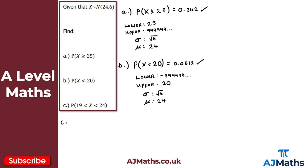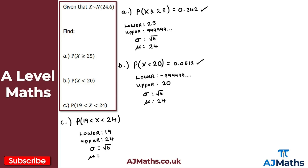Finally, part c: we're looking for the probability that x is between 19 and 24. This is nice and straightforward - the lower value would be 19, the upper value would be 24. Sigma remains the square root of 6 and mu remains 24. Entering these into the calculator gives 0.479 to three significant figures.